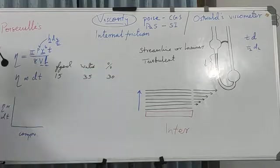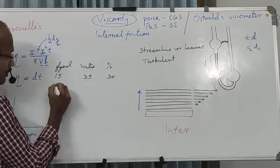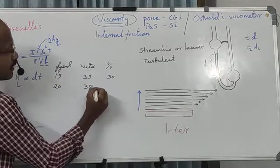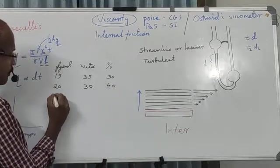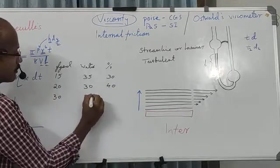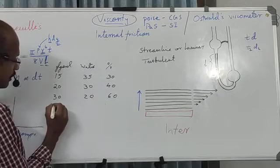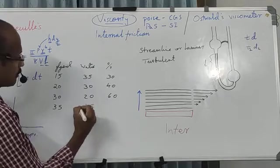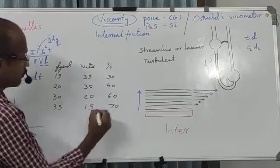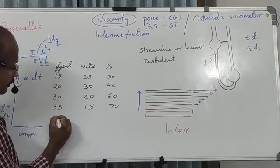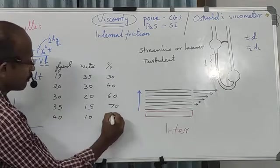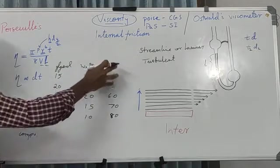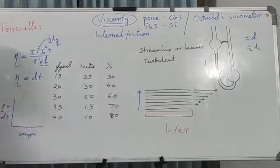Similarly, transferring 20 ml glycerol to 50 ml gives a 40% solution; 30 ml glycerol gives a 60% solution; 35 ml glycerol with 15 ml water gives a 70% solution; and 40 ml glycerol with 10 ml water gives an 80% solution. This gives us different known concentrations of glycerol solutions. Additionally, there is an unknown concentration solution provided to us — its composition is not known.